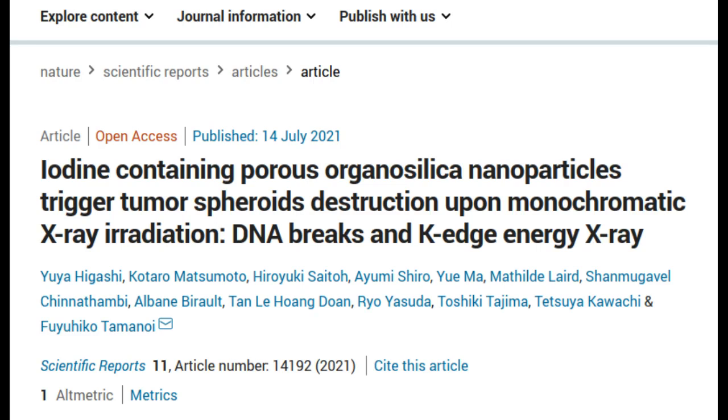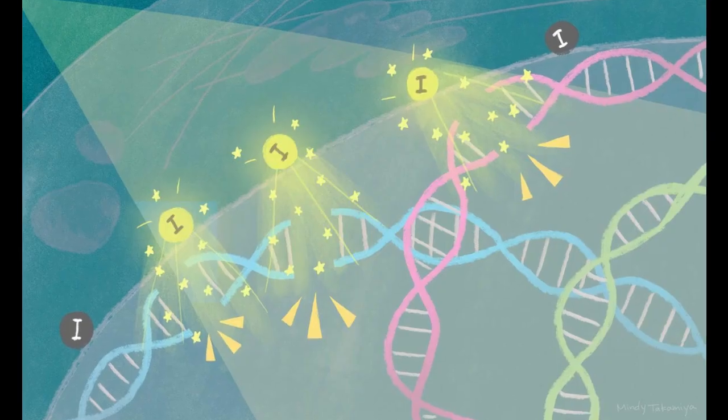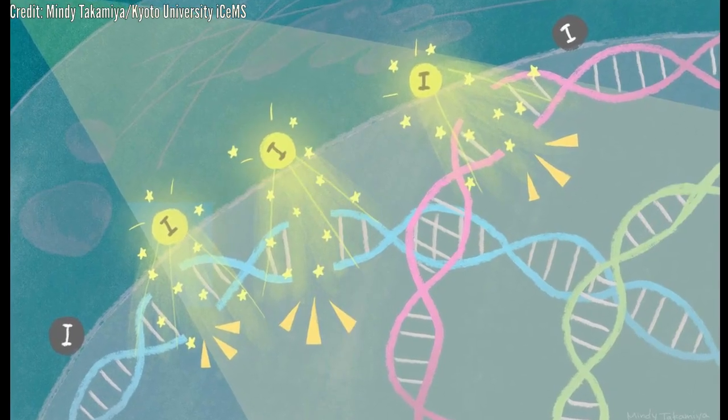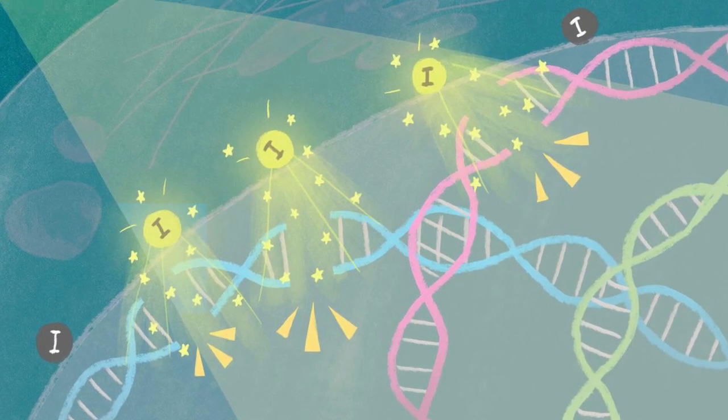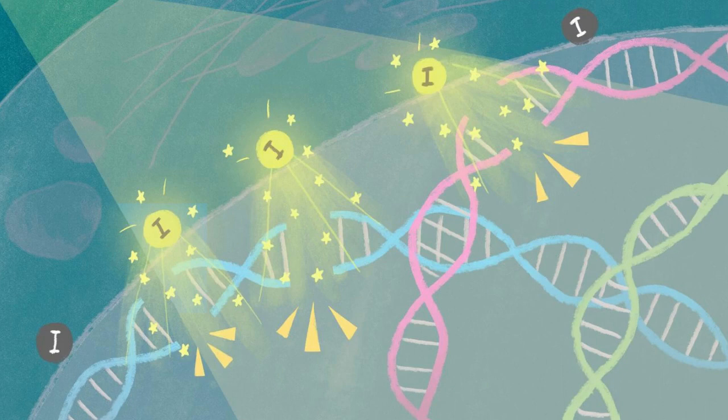The findings by scientists at Kyoto University's Institute for Integrated Cell Material Sciences and colleagues in Japan and the US were published in the journal Scientific Reports. Exposing a metal to light leads to the release of electrons, a phenomenon called the photoelectric effect. An explanation of this phenomenon by Albert Einstein in 1905 heralded the birth of quantum physics.